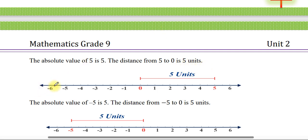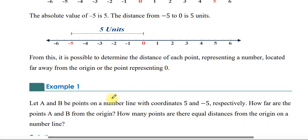The distance is absolute value. So the absolute value of negative 5 is 5, because the value of negative 5 is 5. It is possible to determine the distance of each point representing a number located far away from the origin.